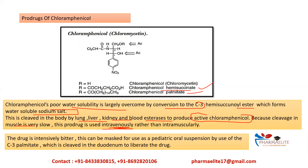The next product is chloramphenicol palmitate. The drug is intensely bitter, and this can be masked for use as a pediatric oral suspension by use of the C3 palmitate ester, which is cleaved in the duodenum to liberate active chloramphenicol. Chloramphenicol palmitate was formulated to mask the bitter taste, while chloramphenicol hemisuccinate was formulated to enhance the solubility of the original drug.